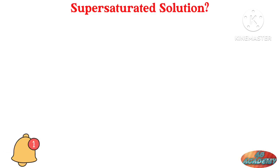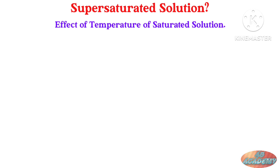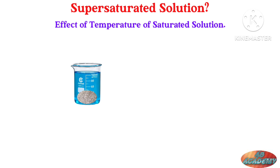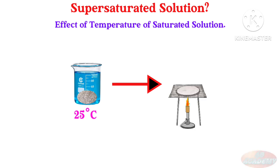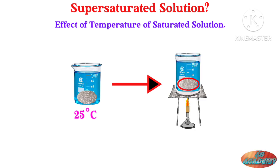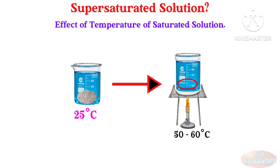Now let us see what is supersaturated solution. To learn the concept of supersaturated solution, you must learn the effect of temperature on saturated solution. Consider the saturated solution of sugar and water at 25 degree centigrade. We can see the undissolved sugar settled at the bottom. Now consider we keep this saturated solution on fire and increase its temperature to 50 or 60 degree centigrade. We will observe that the settled sugar at the bottom will disappear and will dissolve in the water.